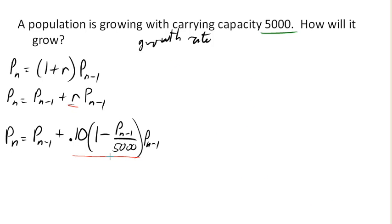So let's see if we can generalize it. P N equals P N minus 1 plus, what was the 10%? The 10% was our normal growth rate. Times 1 minus P N minus 1 over this thing, which is our carrying capacity, which we're gonna represent with a K times P N minus 1. So K is our carrying capacity.